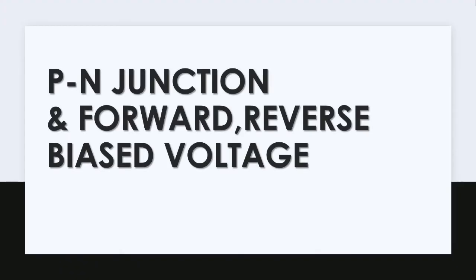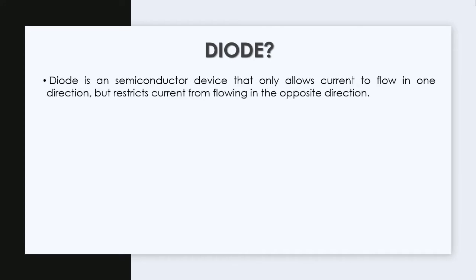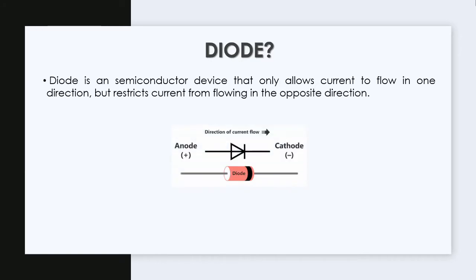PN junction, forward bias voltage, and reverse bias voltage. A diode is a semiconductor device that only allows current to flow in one direction but restricts current from flowing in the opposite direction.